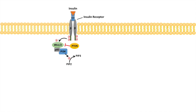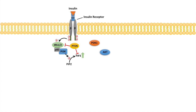Interestingly, PTEN is also a negative regulator of PIP3 — it dephosphorylates PIP3 as well. Nevertheless, when PI3K phosphorylates enough PIP2 to PIP3, PIP3 concentrations increase, which recruits other proteins toward the plasma membrane, including PDK1 and AKT — also known as protein kinase B.